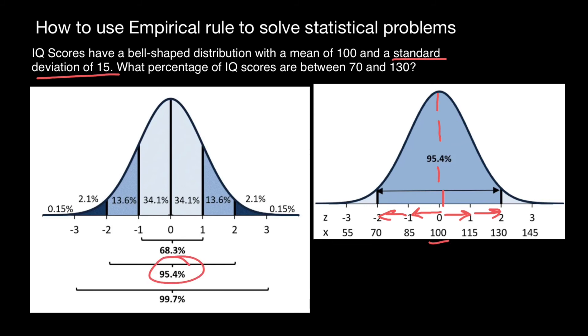Hence the answer to this question that percentage of the people with IQ scores between 70 and 130 is going to be 95.4%.